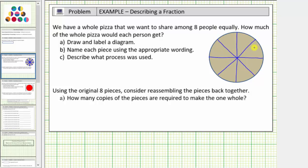Notice each part or piece is one-eighth of the pizza. So for the label, we'll label each piece as one-eighth. One piece would be one copy of one-eighth. Two pieces would be two copies of one-eighth. Three pieces would be three copies of one-eighth and so on.